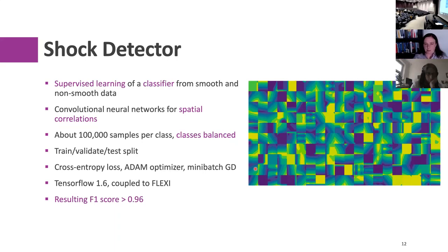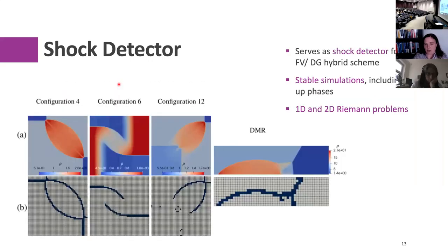We put them into two classes and train a classifier in a supervised learning manner. We use convolutional neural networks because they can deal with spatial data and are shift-invariant, making them well-suited for flow data. We do all the necessary machine learning technicalities and train this classifier to tell us: is there a shock in the cell or not? We couple this back to our Flexi fluid mechanics solver, and this worked surprisingly well.